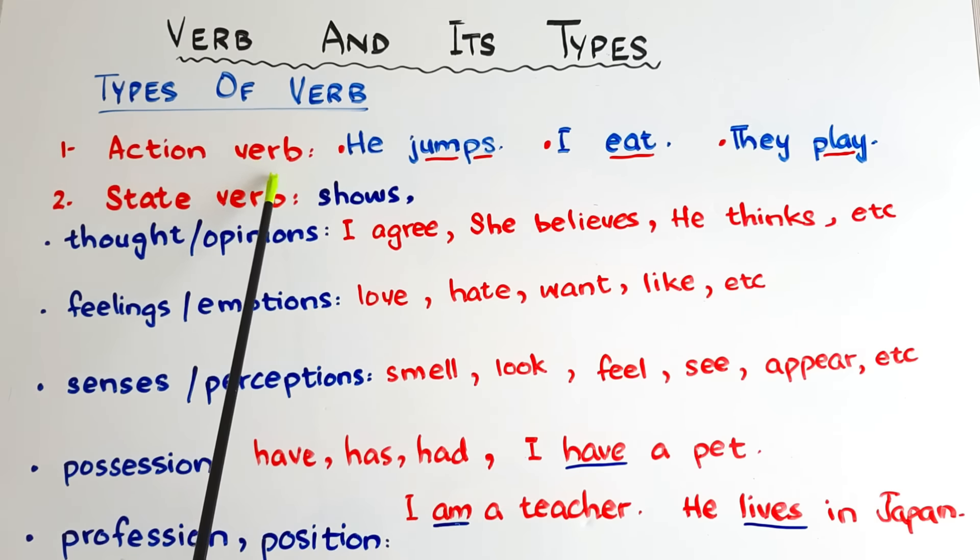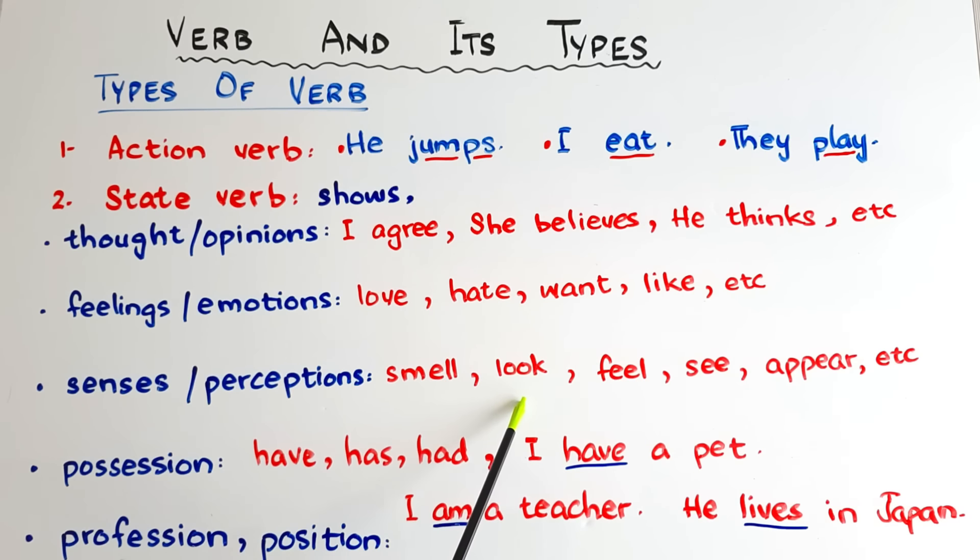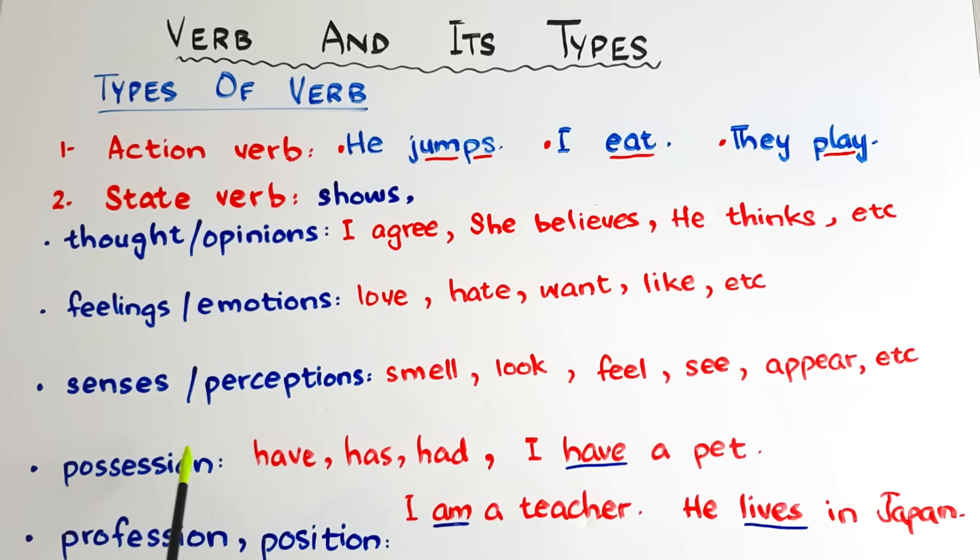When do we use state verbs? State verbs are used to show thoughts or opinions, like 'I agree,' 'I disagree,' 'she believes,' 'he thinks.' Or feelings and emotions, like 'I love pets,' 'I hate pets,' 'she wants,' 'he likes.' And senses and perceptions, like 'the food smells good,' 'you look good,' 'I feel cold,' and so on.